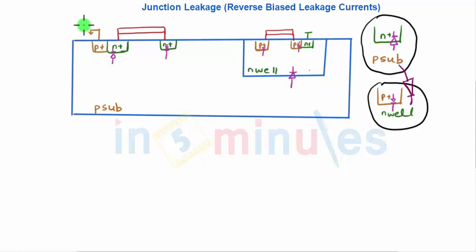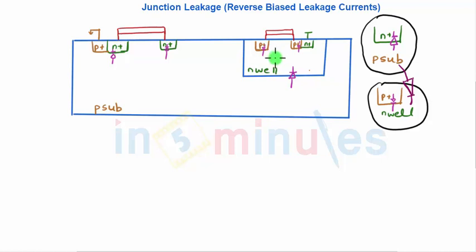Now, P-N junction diodes are formed. If you look at the circuit properly, the P-N junctions are formed between the diffusion and the substrate. The N-type diffusion meets the P-type substrate; P-type is connected to ground, and there will be some source voltage and drain voltage applied. So there is a reverse bias diode forming between the P-N junction. The same is the case — a P-N junction is also formed between the diffusion and the N-well.